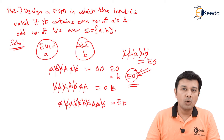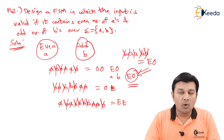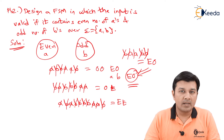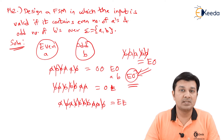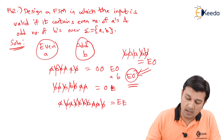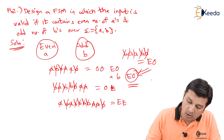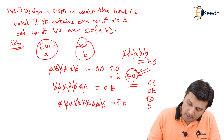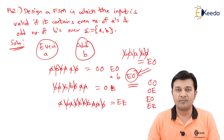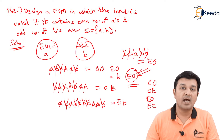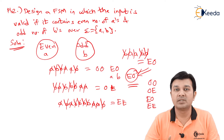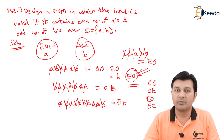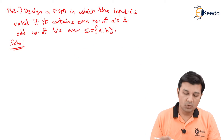Looking at all these examples, I can conclude that the possible four combinations we will come across are: odd-odd, odd-even, even-odd, and even-even. And those are exactly going to be the states that are part of this problem. So let us start.